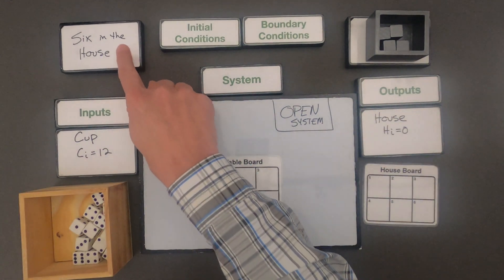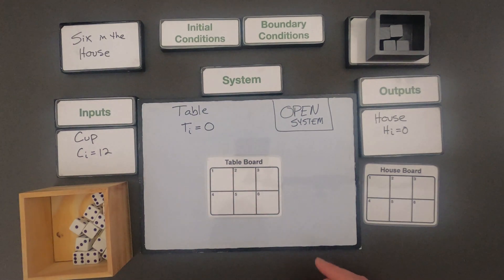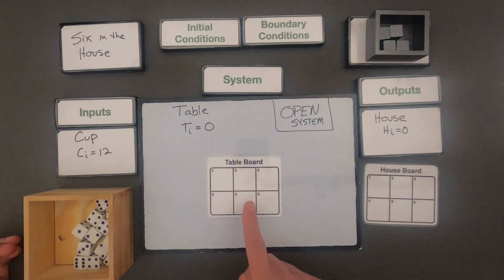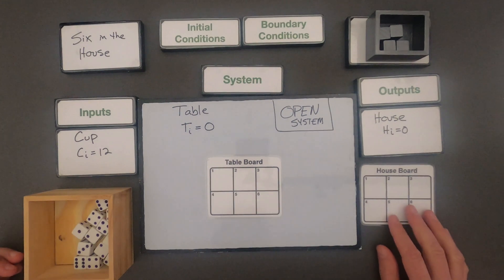let me set up what are called the boundary and initial conditions. Okay, so I've defined the system as this game of Six in the House. The system is going to be this table. The inputs will come from the cup. I'm going to roll the dice and figure out do they make it to the table board or not. And then the goal is get it into the house.